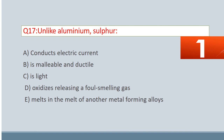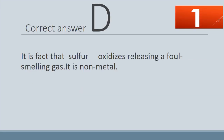Question No. 17. Unlike Aluminium, Sulfur: A. Conducts electric current. B. Is malleable and ductile. C. Is light. D. Oxidizes releasing a foul-smelling gas. E. Melts in the melt of another metal forming alloys. The correct answer is D. Sulfur oxidizes releasing a foul-smelling gas; it is a non-metal.